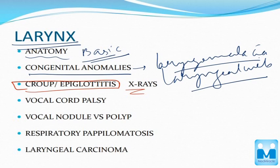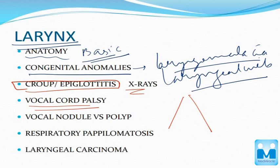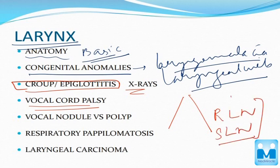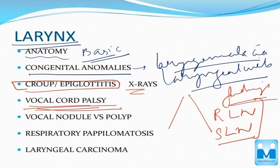The next topic is vocal cord palsy. You have to know the positions — whether it is medial or shifted to the lateral side. In recurrent laryngeal nerve (RLN) palsy and superior laryngeal nerve (SLN) palsy, you have to know what findings you get. Vocal cord palsy should be studied in detail, word by word.